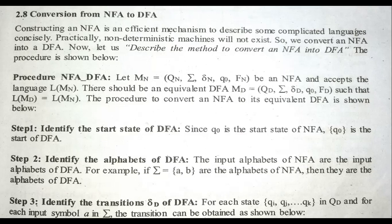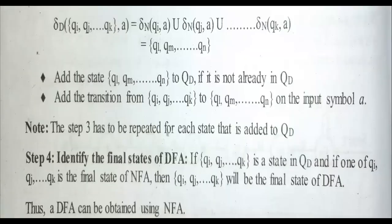The transition can be obtained as follows. Delta_D of {qi, qj, qk} on input a — here qi through qk are states belonging to DFA. We cannot identify them directly; we need to derive them from the NFA. When we solve the problem, this will become easy to understand.